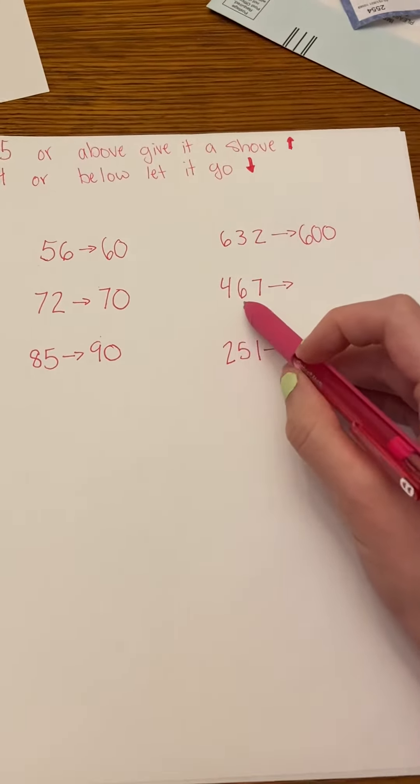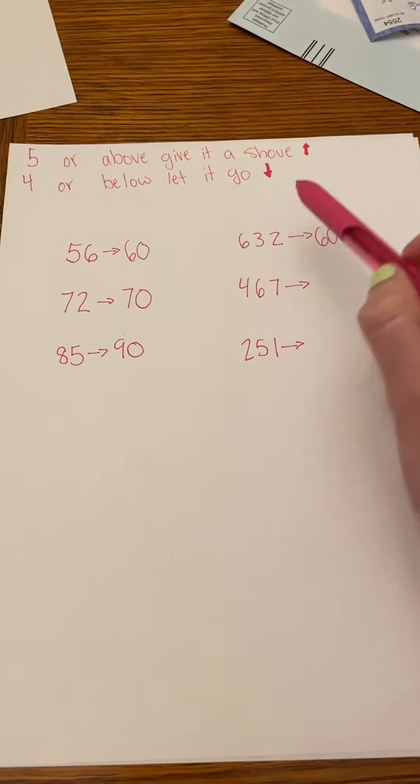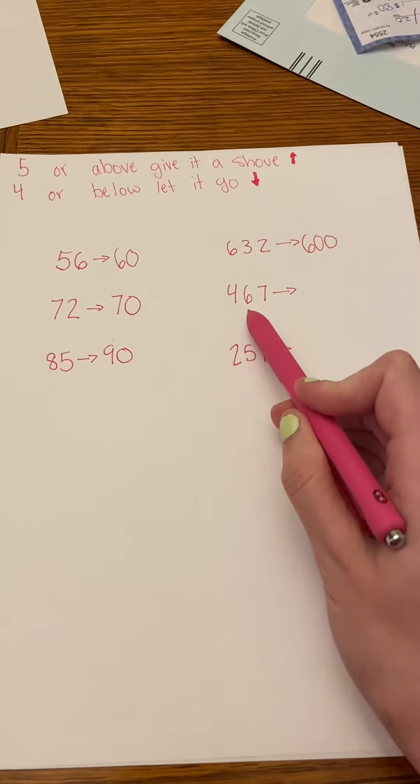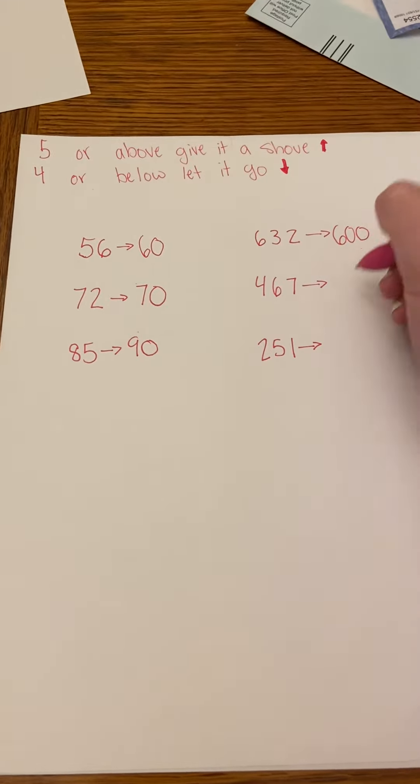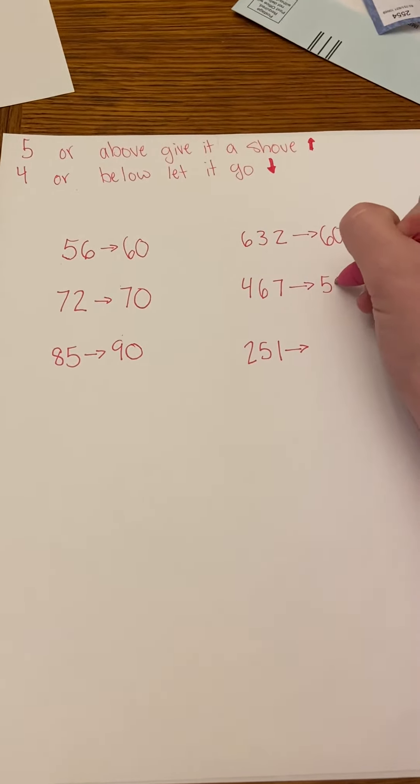And now I have 467. So this one is five or above. I'm looking at the tens place and the six is five or above. So I'm going to round up to 500.